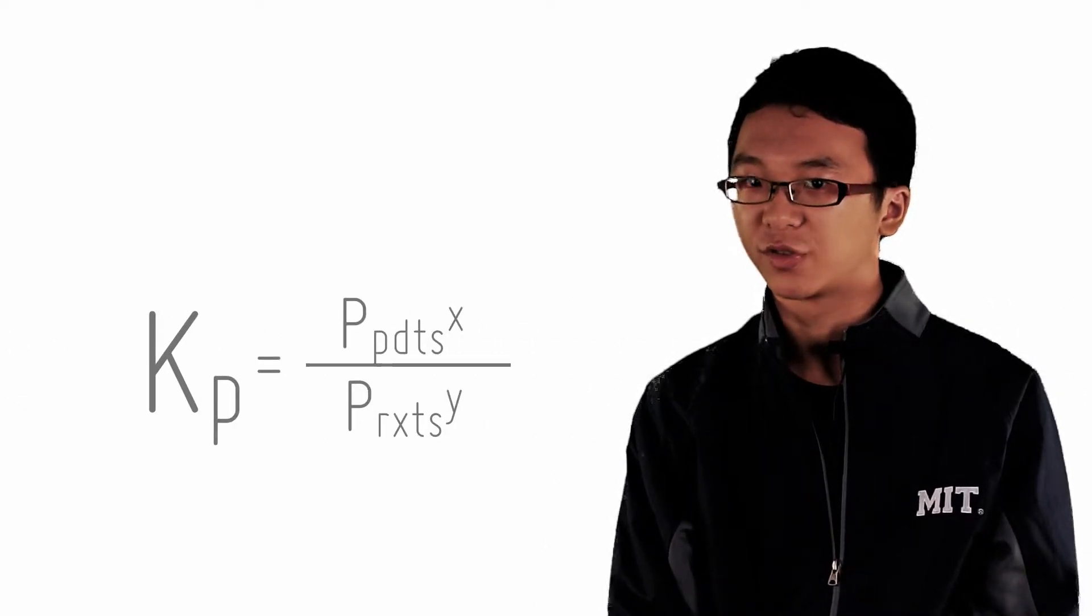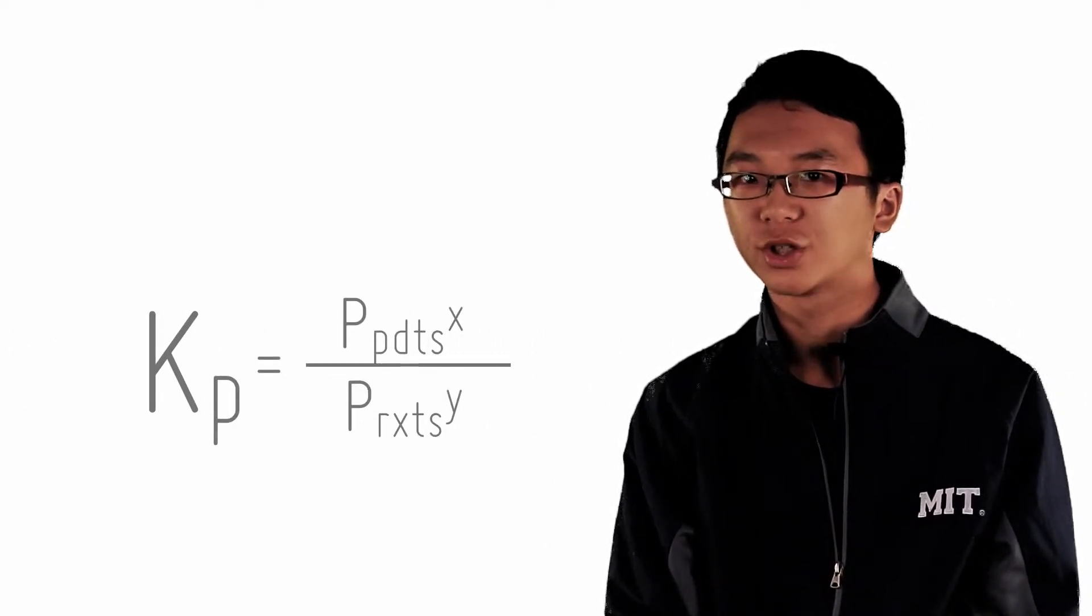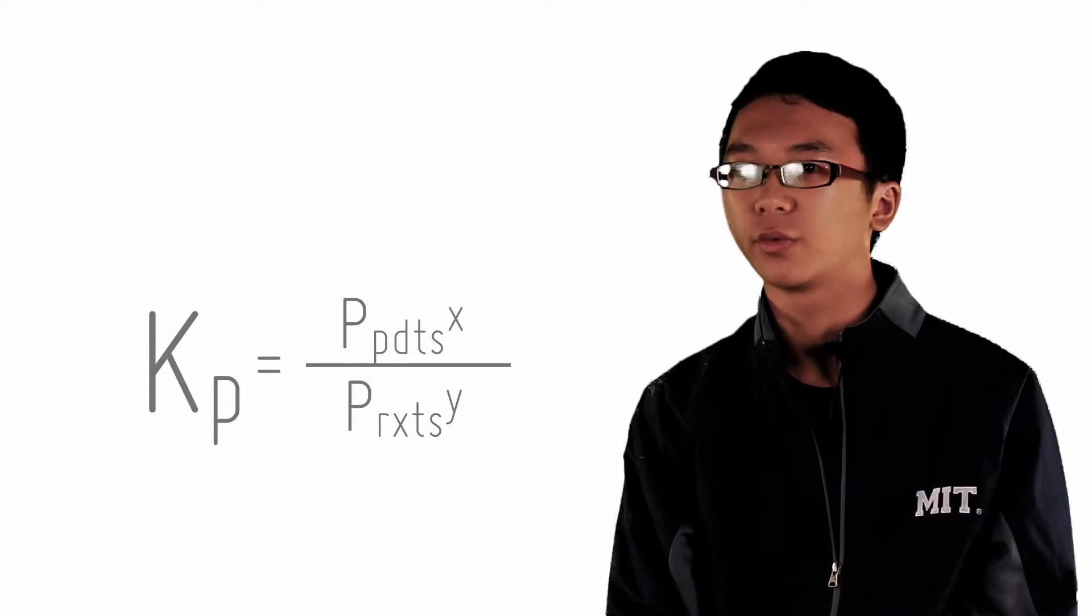How do these two relate to each other? We can derive this quite simply. Let's take a look at the equilibrium constant expression for Kp, which is the partial pressure of the products over the partial pressure of the reactants.